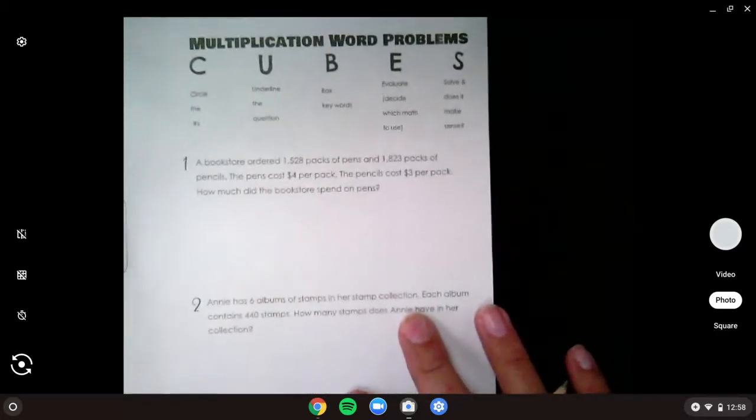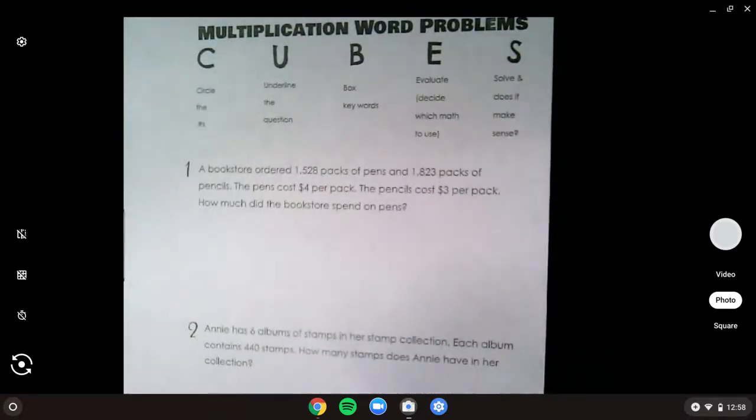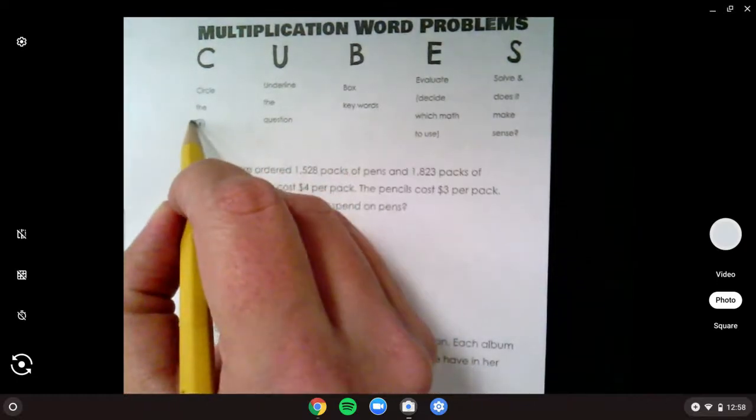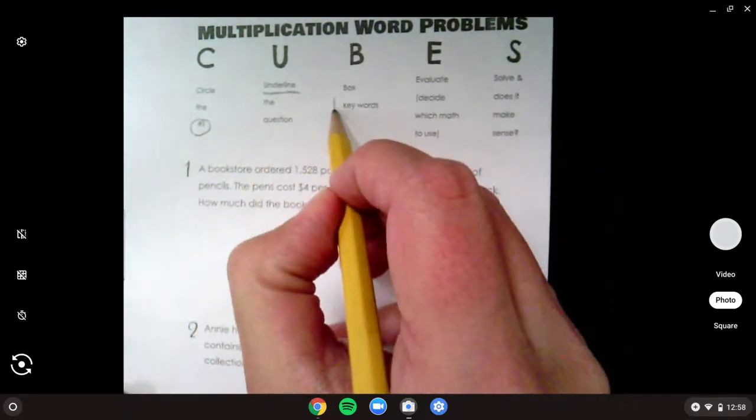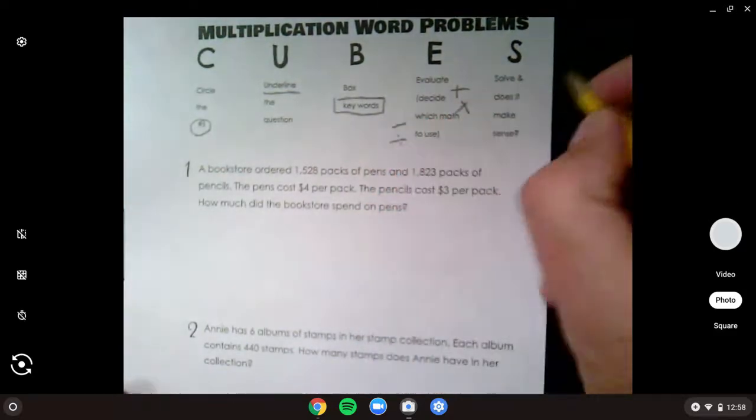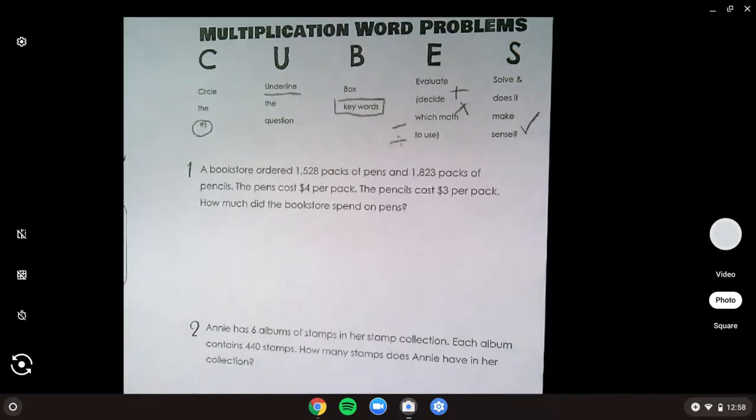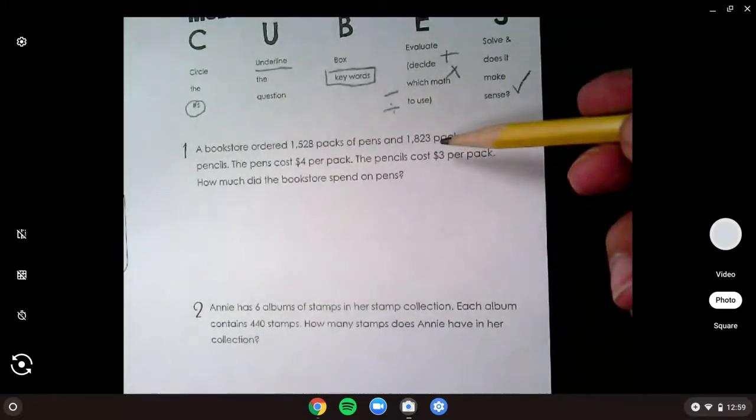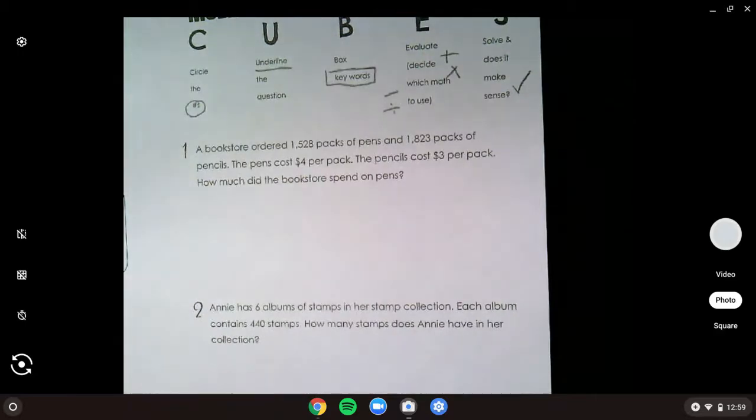So on the right side, what we have are two more problems. Notice I also have the cube strategy across the top. So remember, if you want to circle, underline, box, evaluate, and solve to remind you of those steps in cubes. What I'm going to have you do, my friends in class, is we're going to work on problems number one and two, and we'll come back together in a bit and look over that. My friends at home, you do the same and we will look at it together again in a moment.